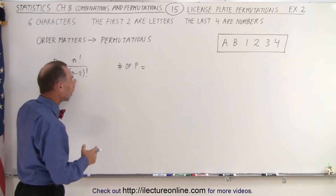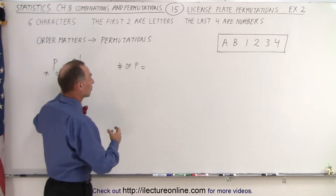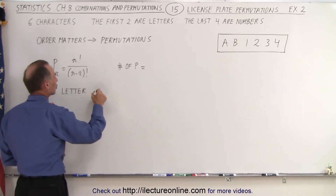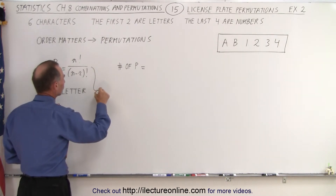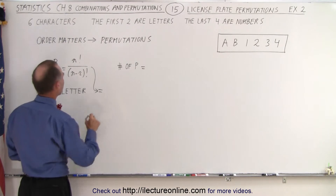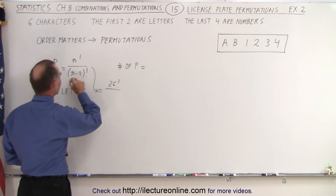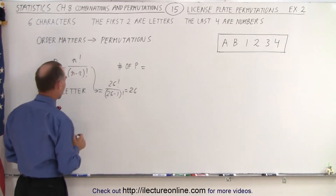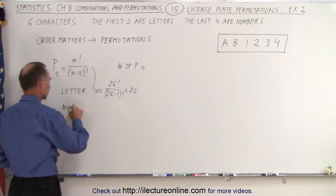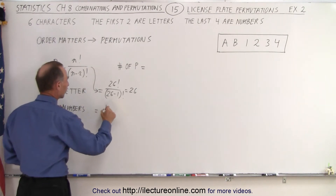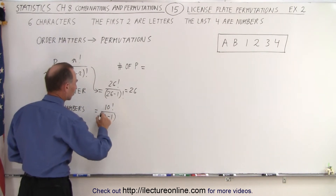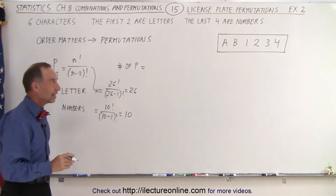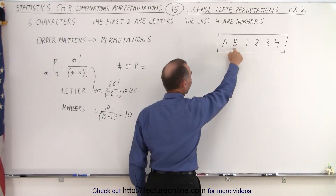That means this will be the case for every one of them. In the case of letters, that becomes n factorial — there are 26 letters — divided by 26 minus 1 factorial, so this equals 26. And for numbers, that would be 10 factorial divided by 10 minus 1 factorial, which is 10 factorial divided by 9 factorial, or simply 10.